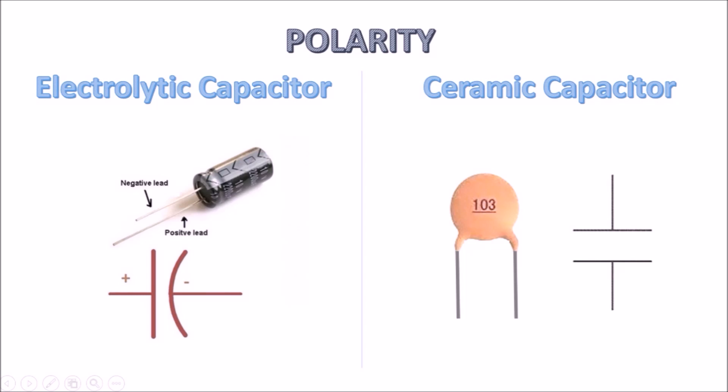The symbol of the electrolytic capacitor is shown below. Ceramic capacitors have no polarity, so we can make any terminal as cathode or anode. The symbol for ceramic capacitor is also shown. Let's move toward the next parameter, which is capacitance.